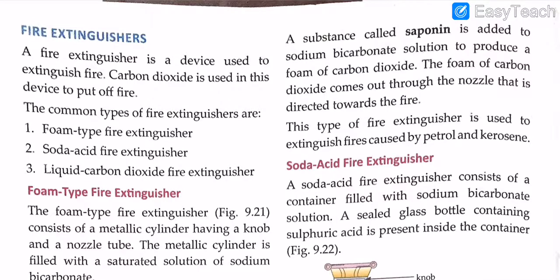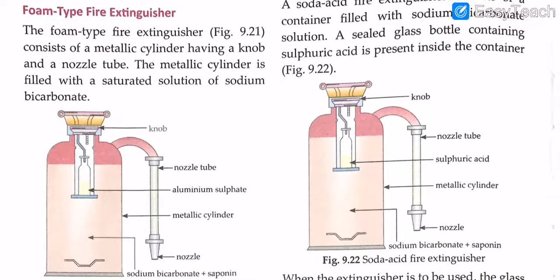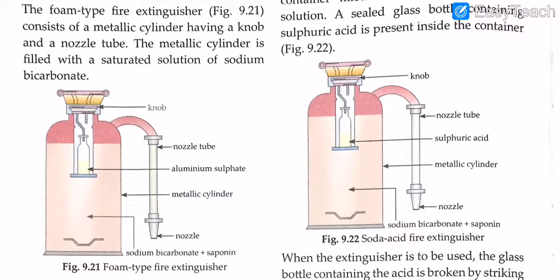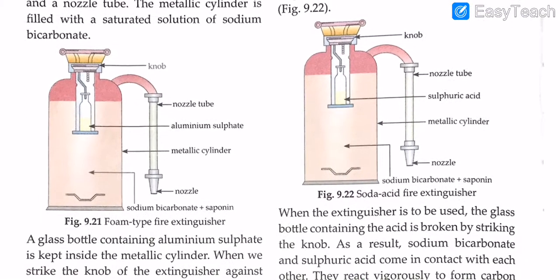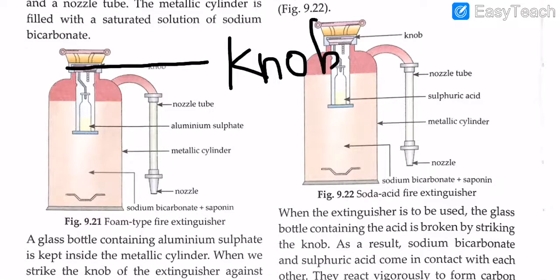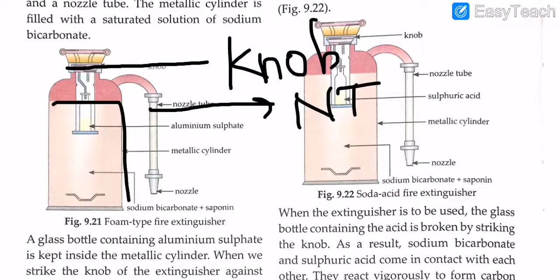The first one is the foam type fire extinguisher. As you can see in this picture, it consists of a metallic cylinder having a knob and a nozzle tube. The metallic cylinder is filled with a saturated solution of sodium bicarbonate. You can see in the diagram that there is a knob right here, and there is a nozzle tube. The metallic cylinder comes with a saturated solution of sodium bicarbonate — NaHCO3.